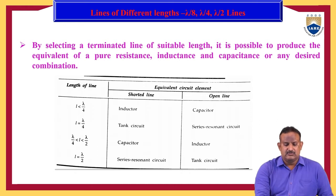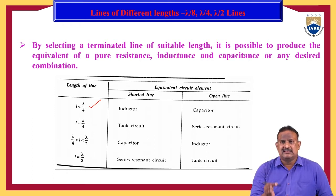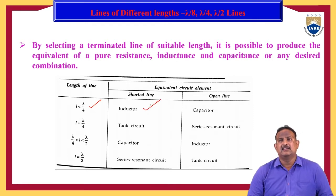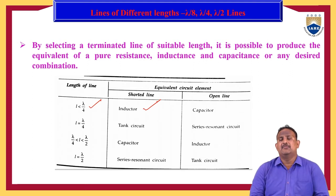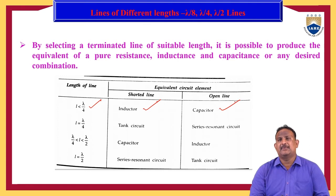If the length of the transmission line is less than lambda by 4 and we short circuit the transmission line, then the line acts as an inductor. If the length of the line is less than lambda by 4 and it is open circuited, then the transmission line acts as a capacitor.